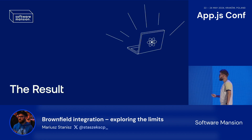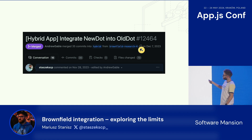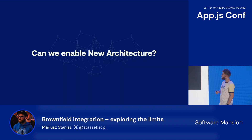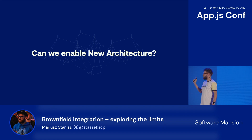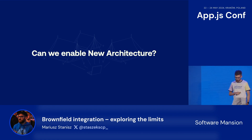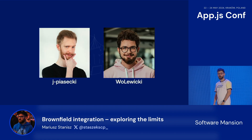Let's go to the results of my brownfield journey. I managed to merge the changes — and you can tell it took a while because the branch name is 'brownfield-research-4'. It had quite a lot of changes, but it was merged and it worked. Then we asked ourselves the ultimate question: can we enable the new architecture for a brownfield application?